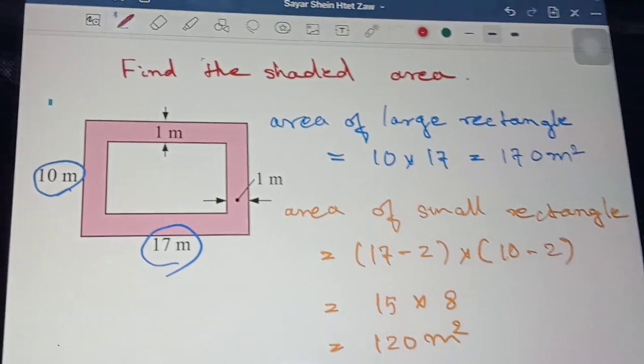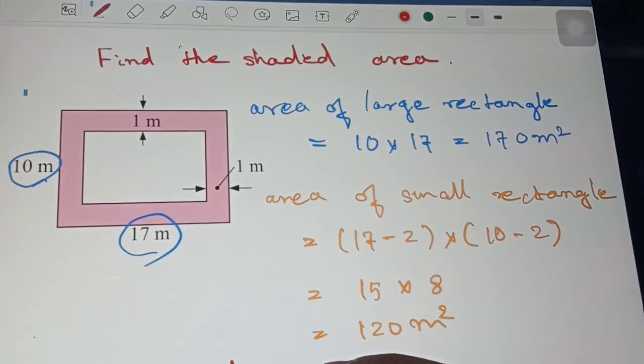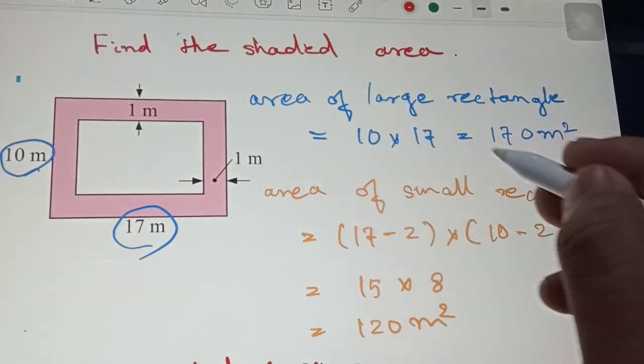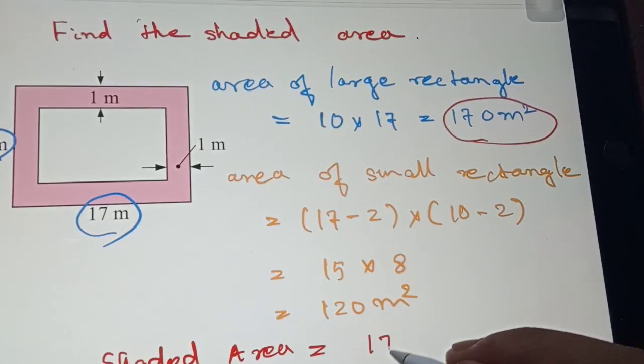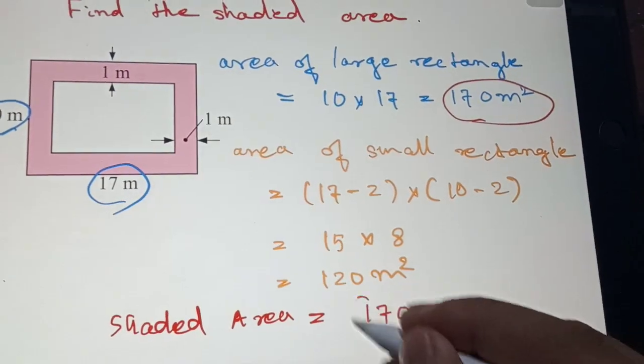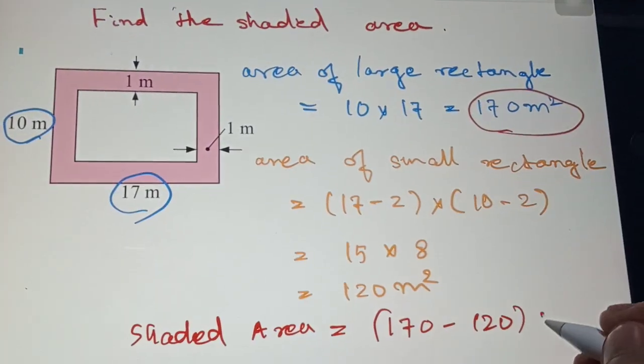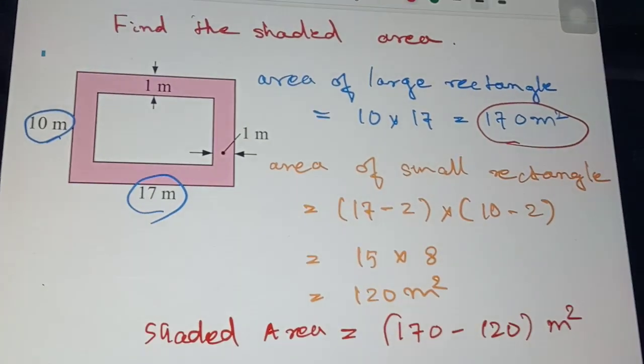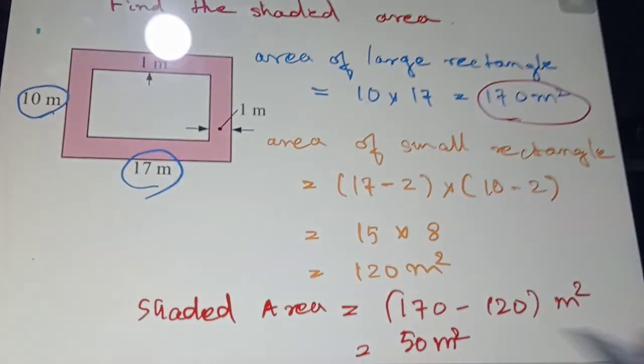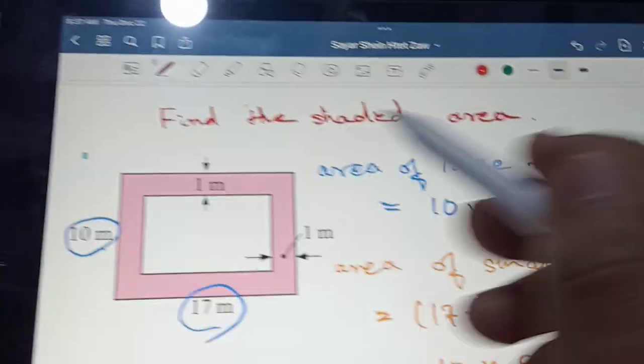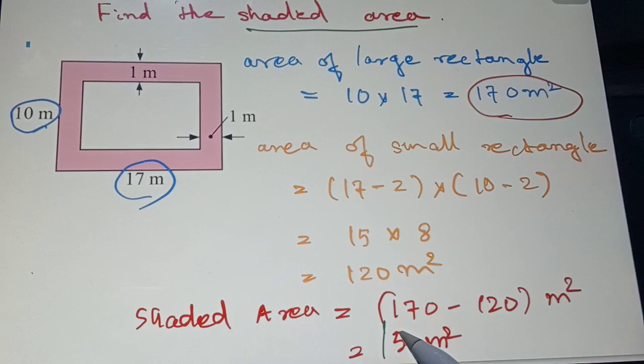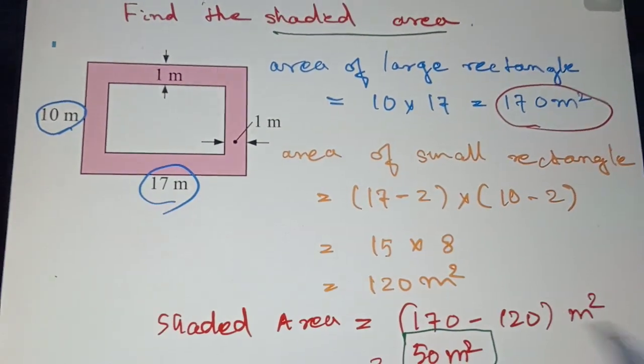Shaded area, shaded area. 100 and something, 120. 50 meter square. Shaded area, 15 meter square.